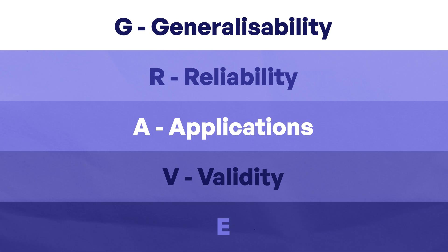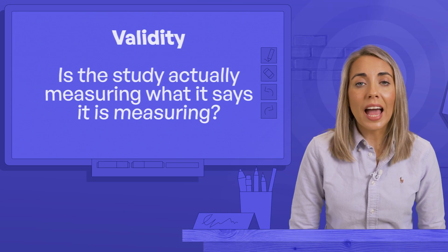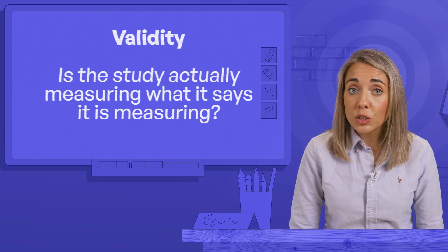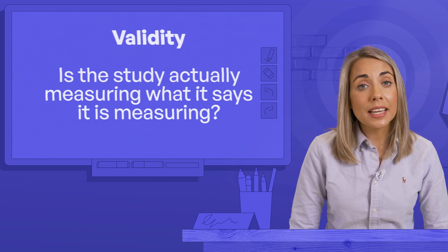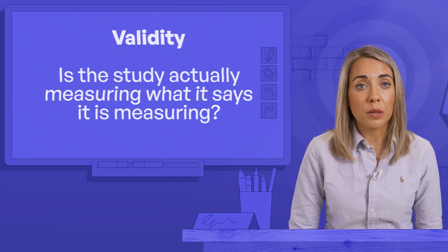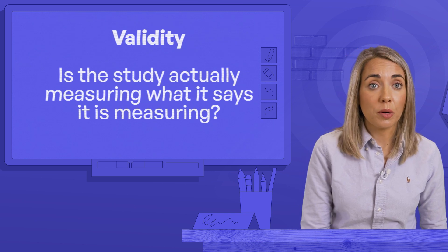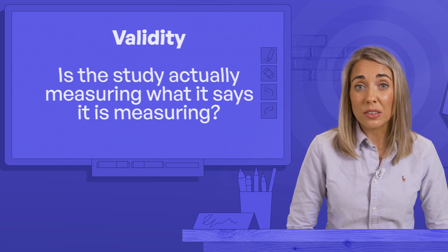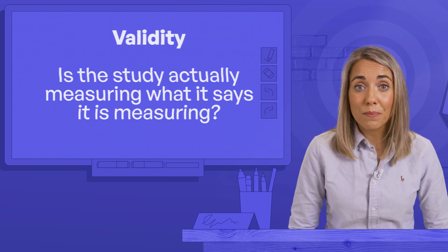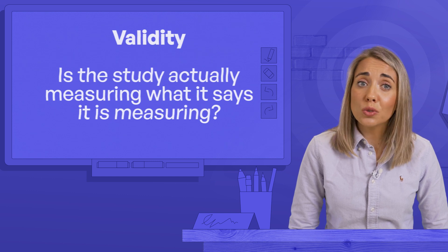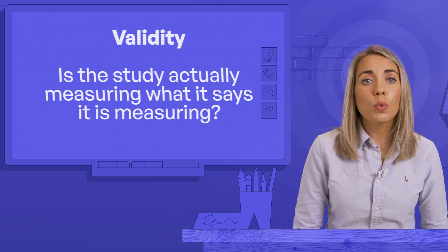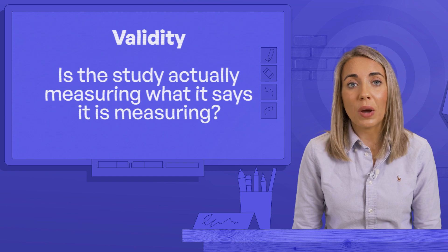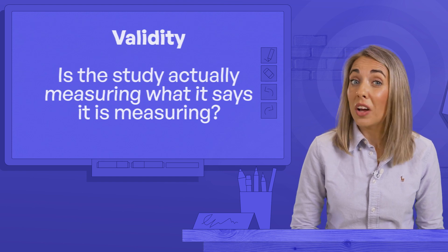V is for validity. Is the study actually measuring what it says it's measuring? How likely is it that the independent variable influenced the dependent variable? Could it have been something else entirely? And don't forget our old friend ecological validity — would the participants act the same way in a real life setting?